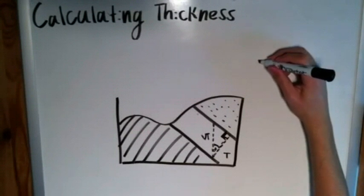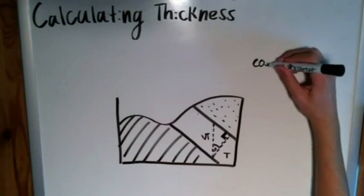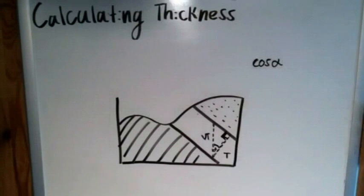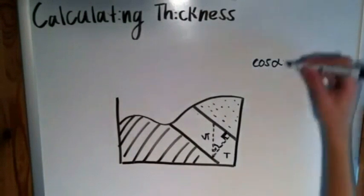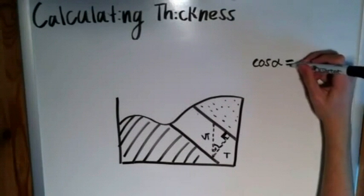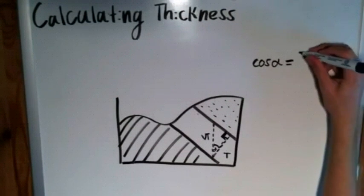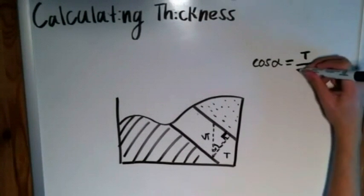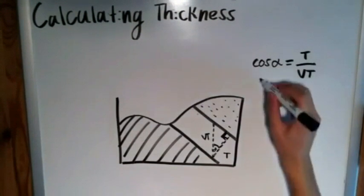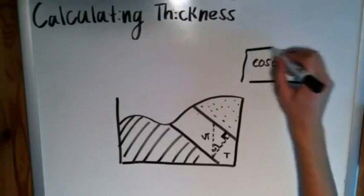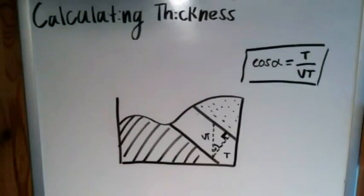So then we can say that the cosine of alpha—the cosine of any angle is equal to the adjacent over the hypotenuse of the triangle—then the cosine of alpha is equal to the thickness T over the vertical thickness VT. And that's all that the equation is, incredibly simple. You just derive it by using some simple trigonometry.